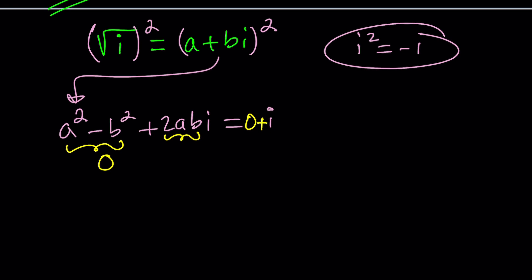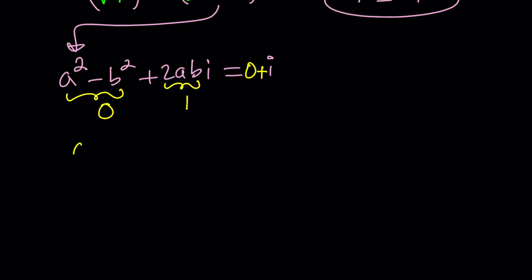So the real part is 0, which means a squared minus b squared is equal to 0. And then the imaginary part is the coefficient of i, which is 1. It doesn't include i in it. So from here, we get the following system: a squared equals b squared, and ab equals 1 half. So far so good? Now let's go ahead and solve this system.